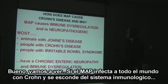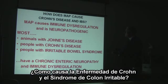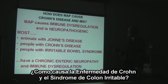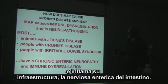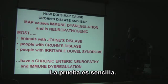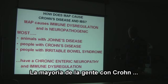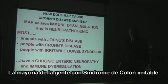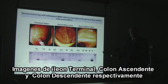If MAP is infecting almost everybody with Crohn's disease and hides from the immune system, how does it cause Crohn's disease and irritable bowel syndrome? It does so because MAP dysregulates the immune system and inflames the fine structure and function of the enteric nerves of the gut. The evidence for this is clear: most animals with Johne's disease, most people with Crohn's disease, and most people with irritable bowel syndrome have chronic inflammation of the nerves of the intestine — chronic enteric neuropathy — and a local and general immune dysregulation.